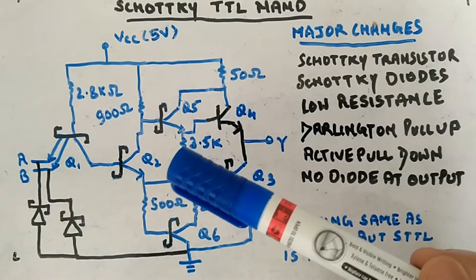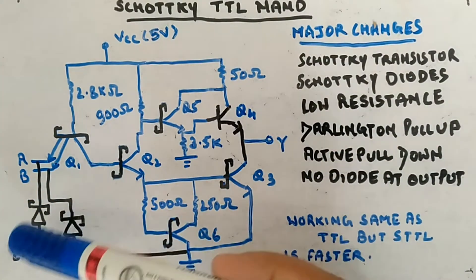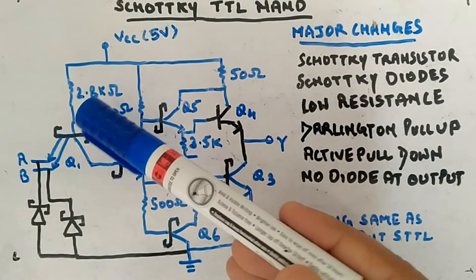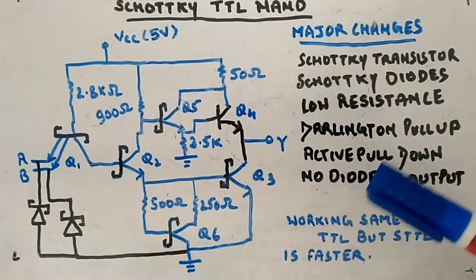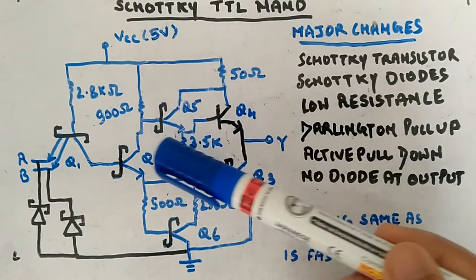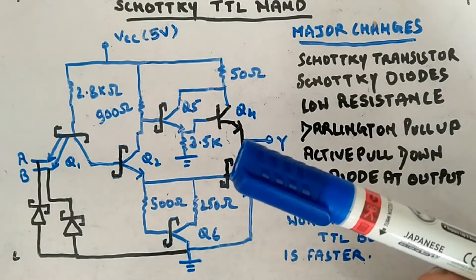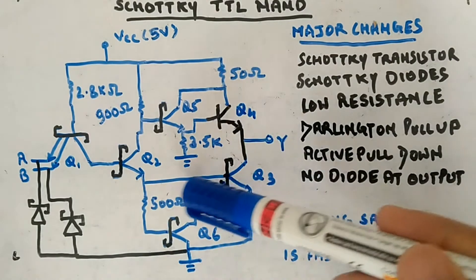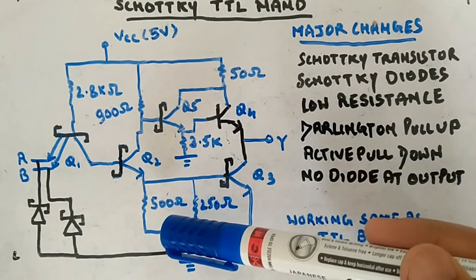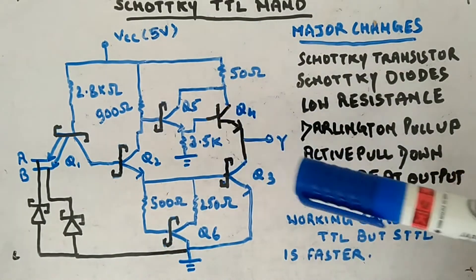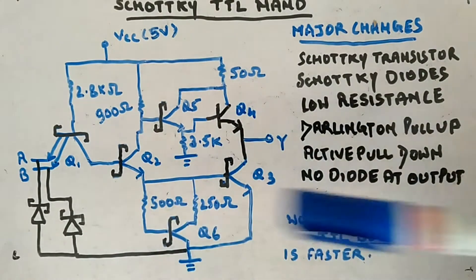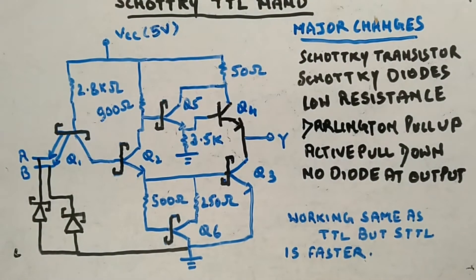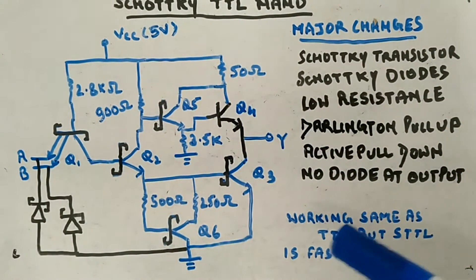Major changes compared to TTL NAND gate: Schottky transistor is the main change, except for Q4. You have a Schottky diode connected between ground and the input — it is not a normal diode. Then you have low resistance values. Then you have a Darlington pull-up — this arrangement of Q5 and Q4 is a Darlington pair. Then you have active pull-down: instead of a resistor you have an active pull-down. Previously you had one resistor connected directly to Q4. Also, there is no diode at the output.